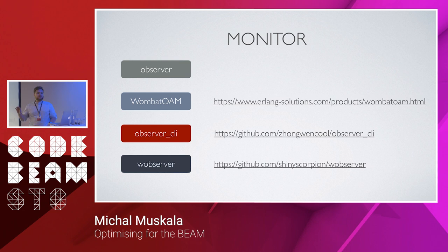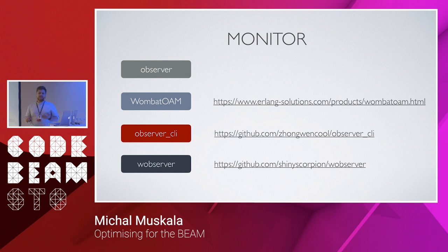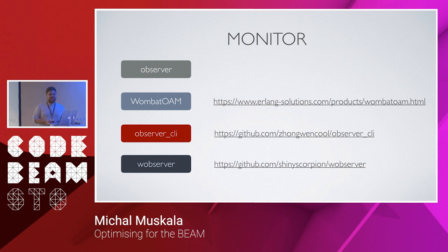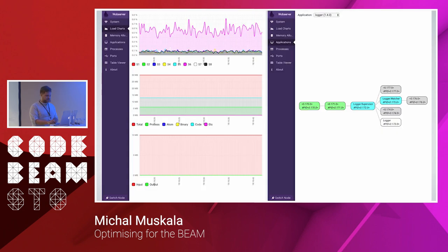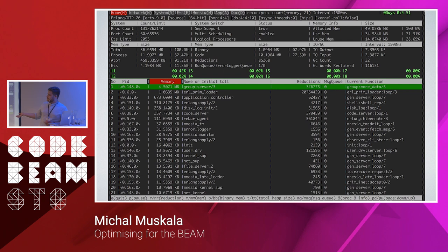Observer is a great tool — it's built in, simple, but has a lot of potential for discovering issues. There's also Wombat, the commercial product from Erlang Solutions, which has some integrations. There are also two great tools: Observer CLI, which gives you a CLI version of Observer, and Wobserver, which is a web-based Observer. Basically everything you have in your regular Observer, you can get in the browser.